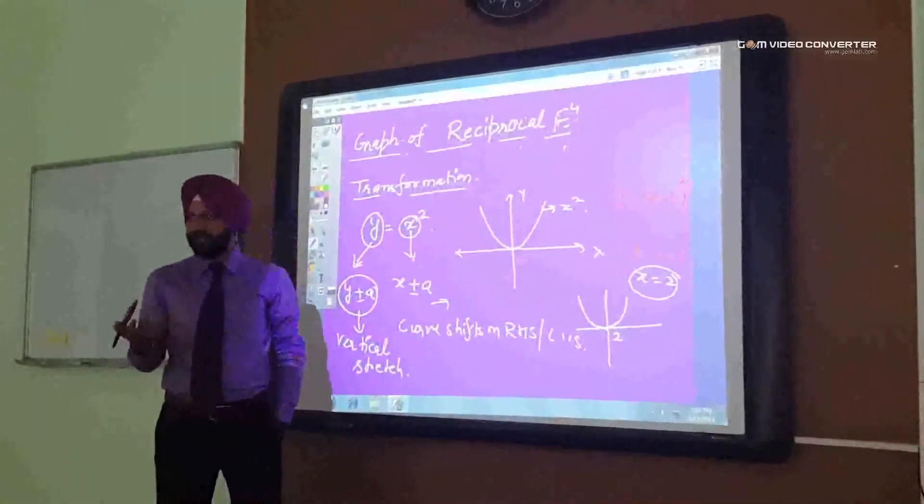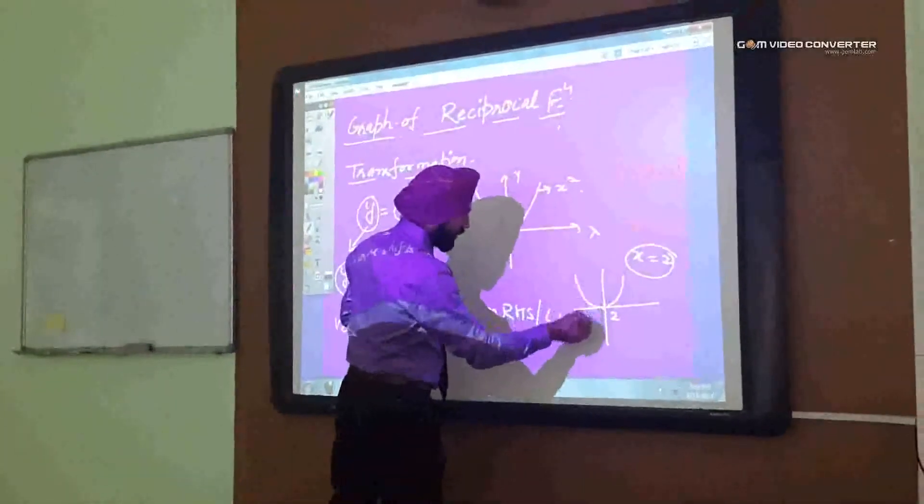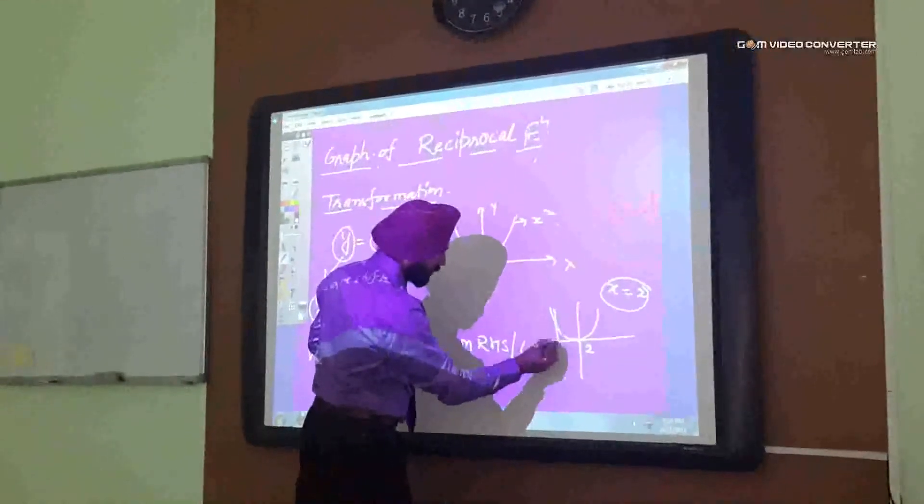Now, where is 0 then? 0 will be on the left side. So, this is 2, so let's say it is 1, so it is 0.